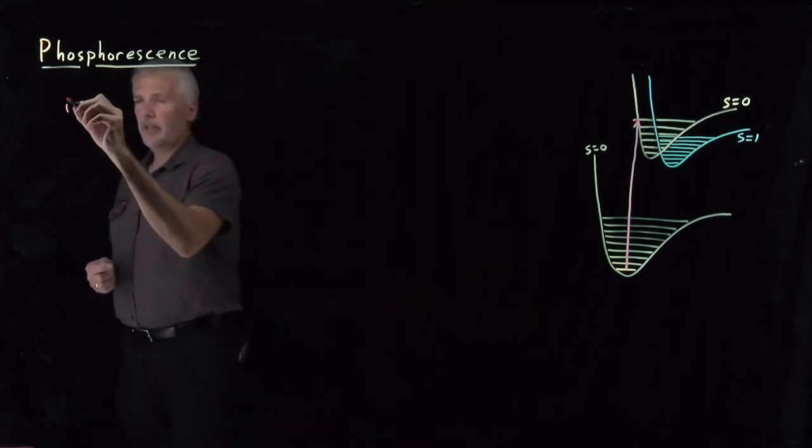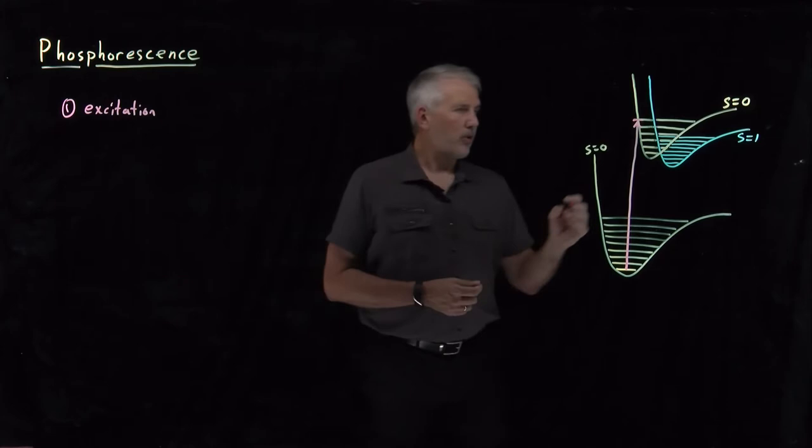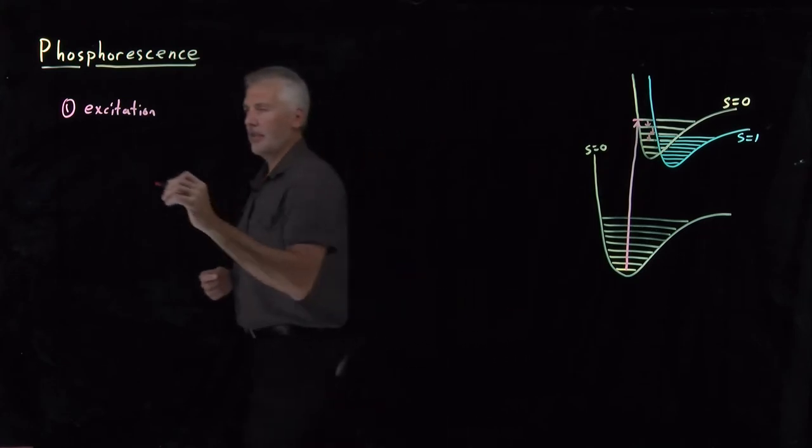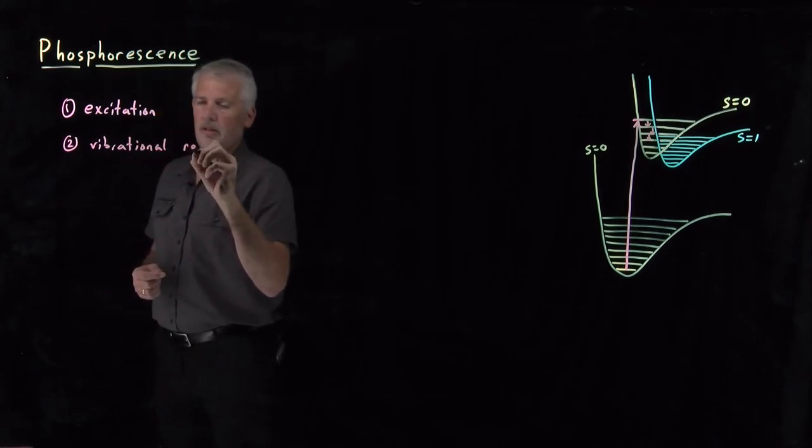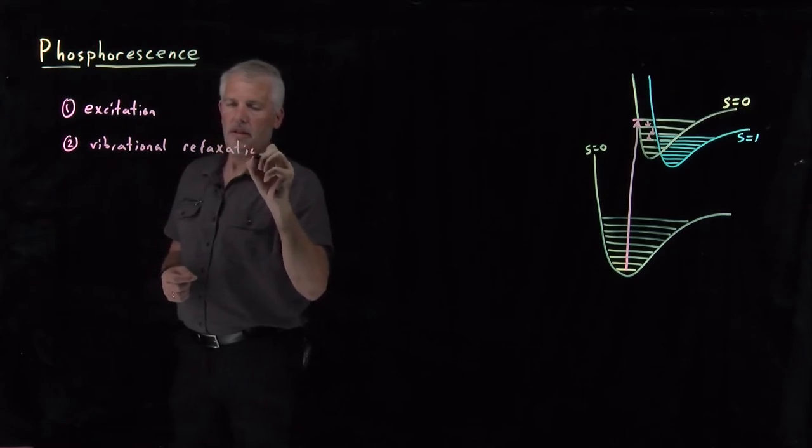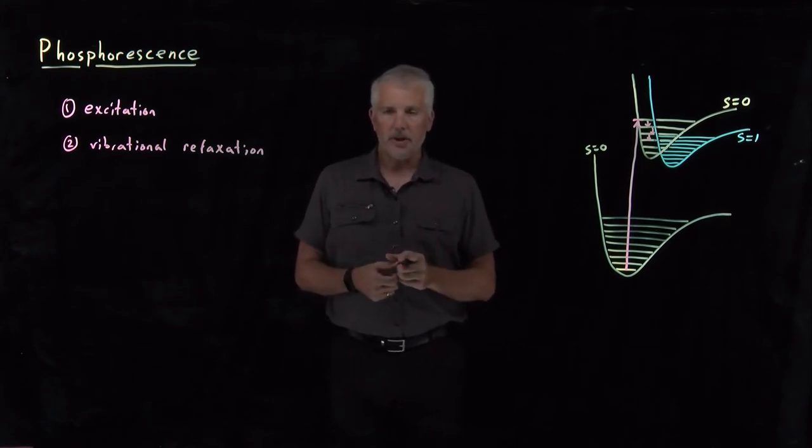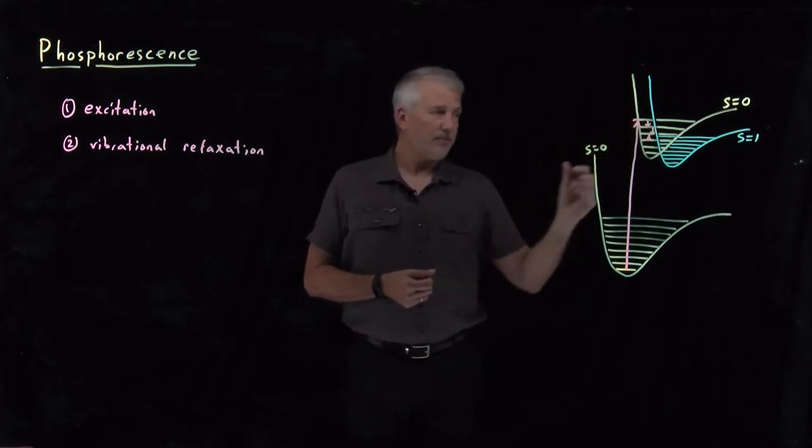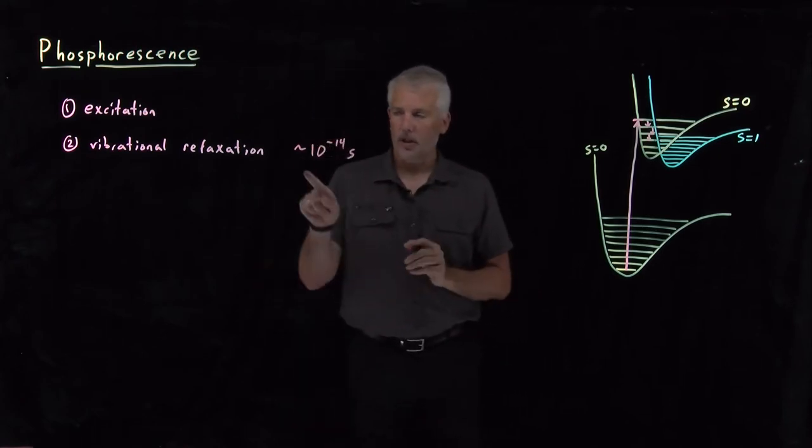If we excite the molecule, we know from talking about fluorescence that the next thing that's going to happen is vibrational relaxation because that step is very fast. Vibrational relaxation happens on the time scale of an individual bond vibration. The frequency of a bond vibration is such that the period is in the tens of femtoseconds, so roughly every few tens of femtoseconds this molecule will fall down to a lower vibrational state. That happens on a time scale of something like 10 to the minus 14th seconds. Very, very quickly.